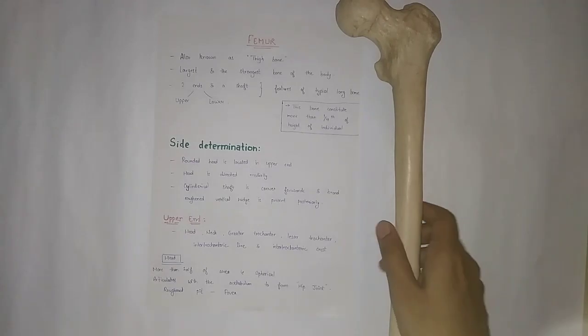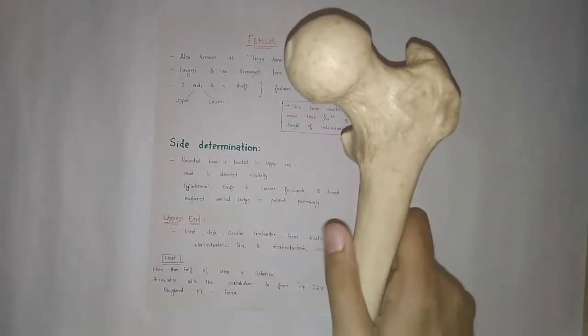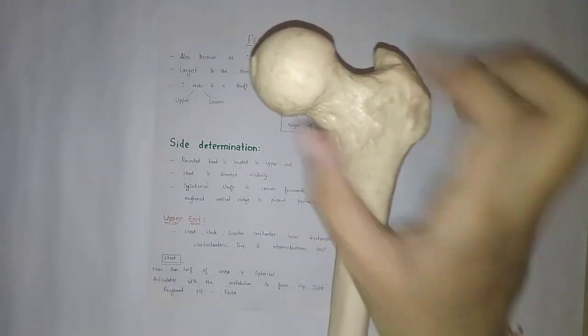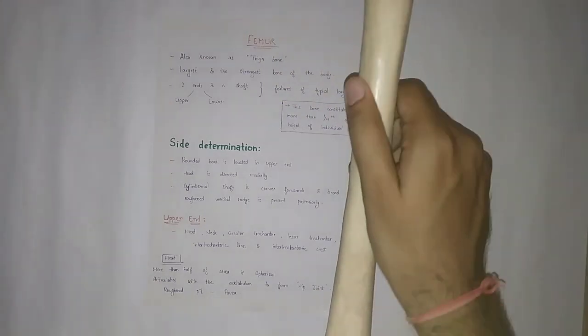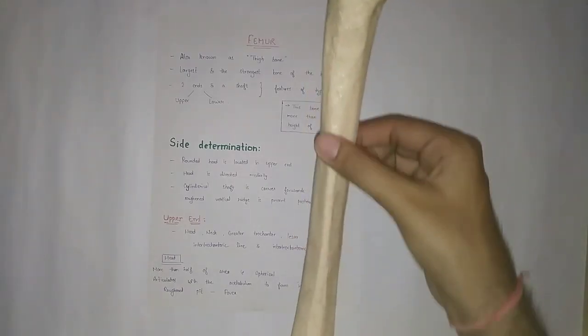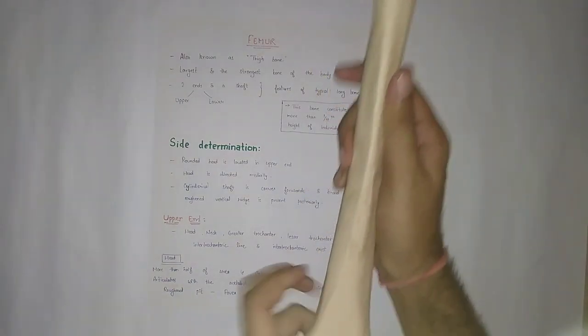First, let's quickly discuss side determination. For side determination, the upper end has a rounded head which is medially present. If we talk about the shaft, the anterior side is quite smooth and rounded, and the posterior side has a vertical ridge present, as you can easily find out.